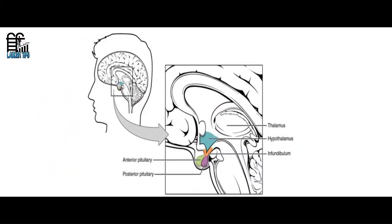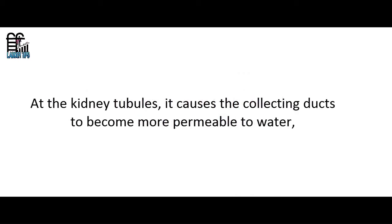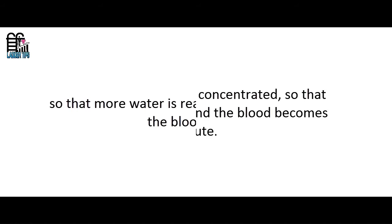These cells cause the pituitary gland to release more ADH. The ADH travels in the bloodstream to the kidney, where it causes the collecting ducts to become more permeable to water, so that more water is reabsorbed back into the blood.